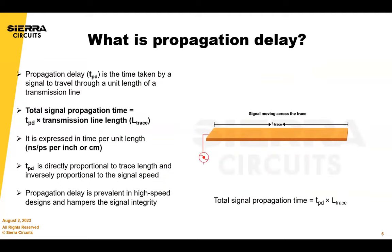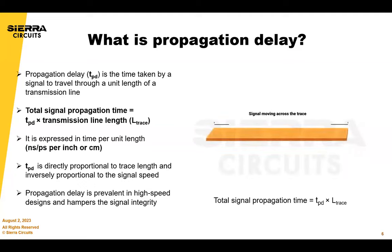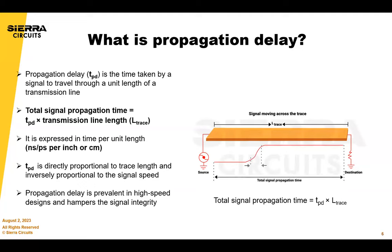First, the basics — the definition. Propagation delay is the time taken by a signal to propagate over a unit length of the transmission line. You can estimate the total signal propagation time by multiplying the propagation delay by the transmission line length. Propagation delay is expressed in time per unit length — nanoseconds or picoseconds per inch — and is directly proportional to trace length and inversely proportional to signal speed.